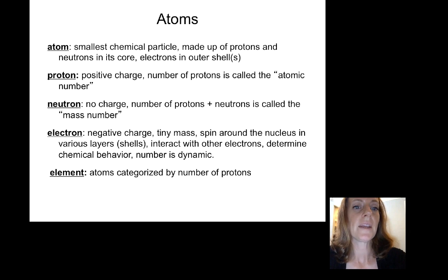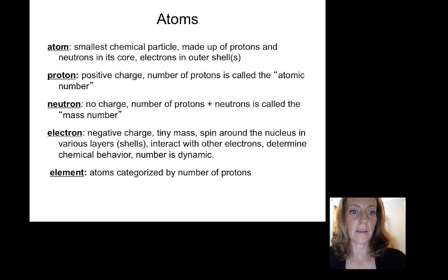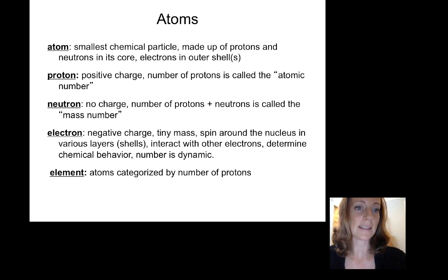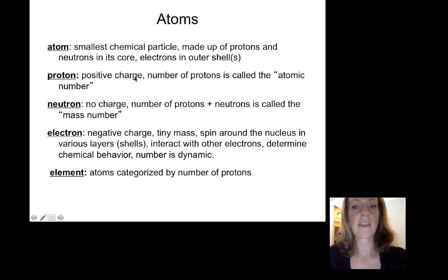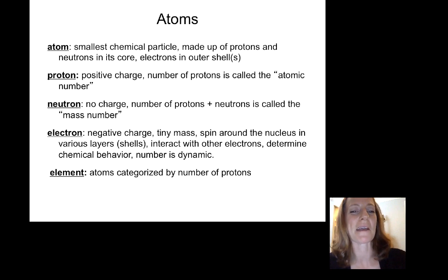To review: an atom is the smallest chemical particle, made up of protons and neutrons in the core and electrons in the outer shells. The first shell can hold two electrons; the outer shells can hold up to eight. The number of electrons balances out the protons in the core. The number of protons is called the atomic number. I'm linking to a periodic table — some of you probably haven't looked at one since high school.